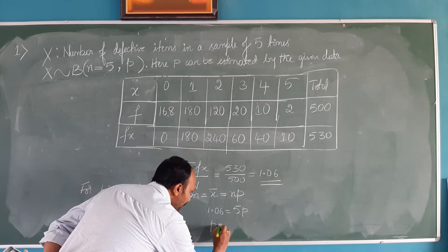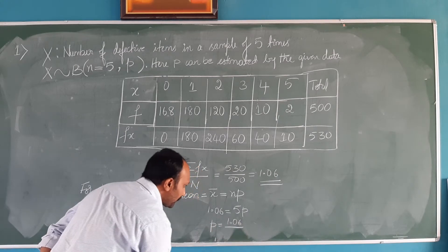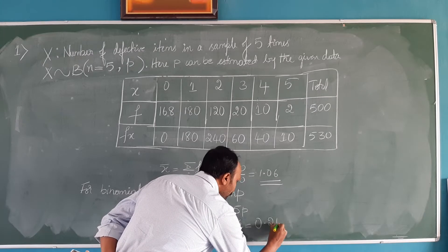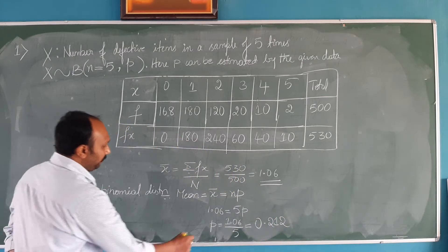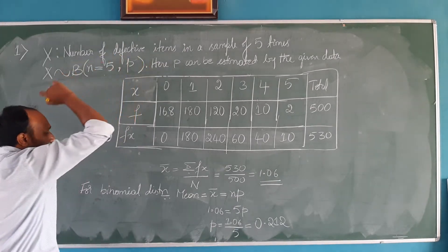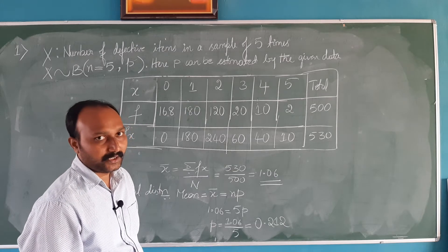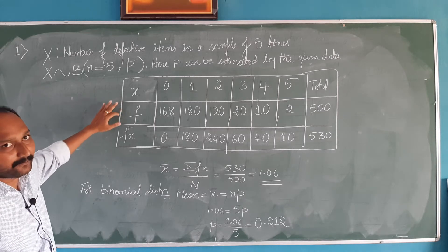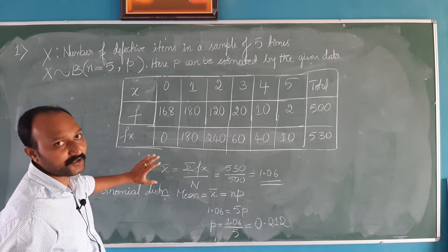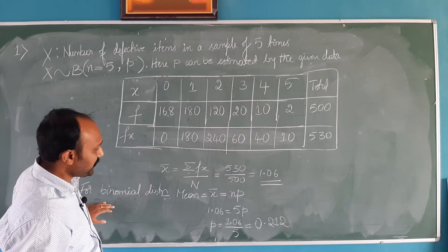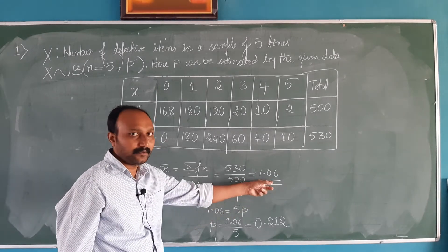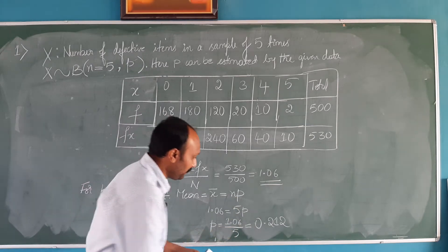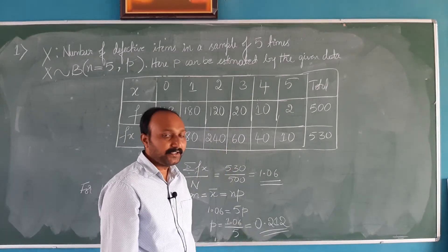So what is p? p is equivalent to 1.06 divided by 5. The answer is 0.212 — this is the p-value. So now we have the value of p. Once again: first we were given only the table having x and f values. Using this table, we found x-bar, the mean value. For binomial distribution, mean is NP. Mean is 1.06, n value we know is 5, so p value — probability of success — is 0.212.